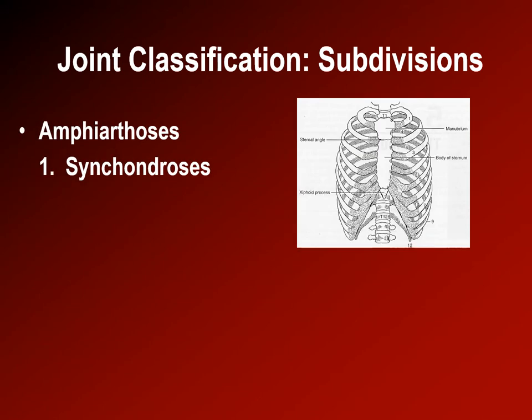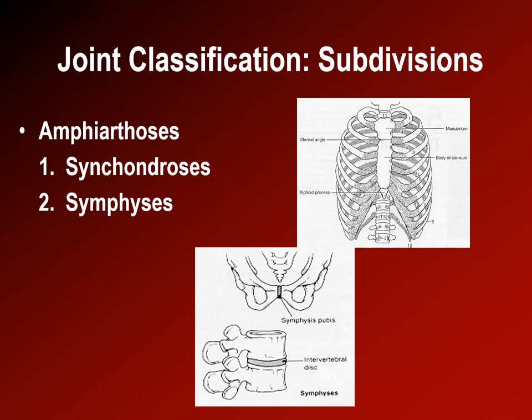Amphiarthroses are cartilaginous joints. One type is a synchondrosis, which is meant to bend, like the costal cartilages of the ribs. The symphysis joints are very strong and made out of fibrocartilage — a very fibrous tissue with structured layers of collagen fibers. We see fibrocartilage structures in areas subject to both a lot of pressure and tension but that still need some flexibility.